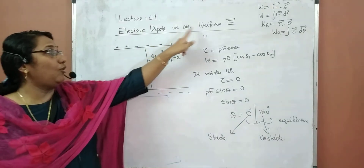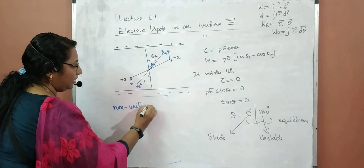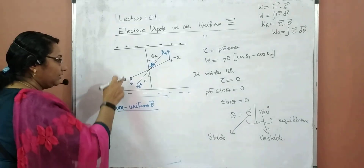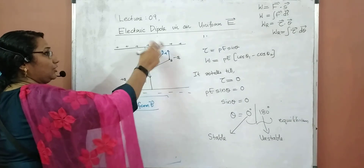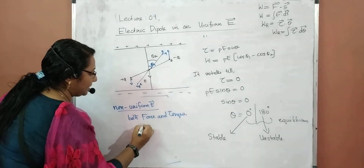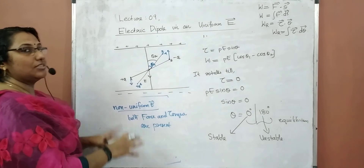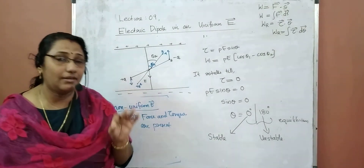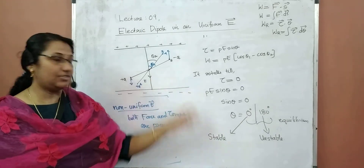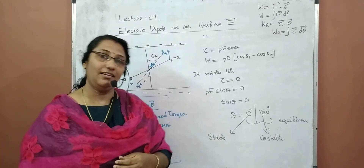Special case: if the electric dipole is placed in a non-uniform electric field, the force eQ on the two charges will not be equal. So in a non-uniform field, both force and torque are present, whereas in a uniform field there is no net force — only torque. Study this well. See you in the next video. I am your Ashraf Bino from Physics Gallery. Bye!